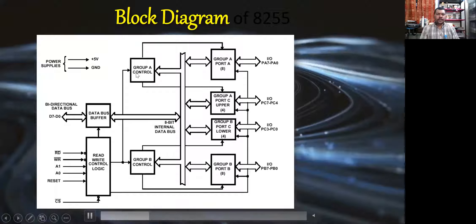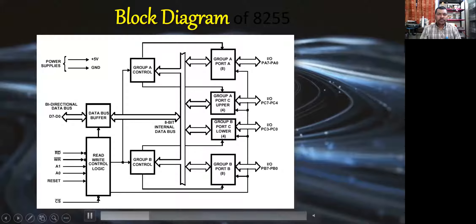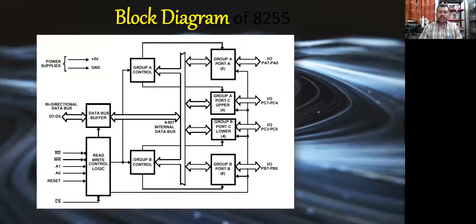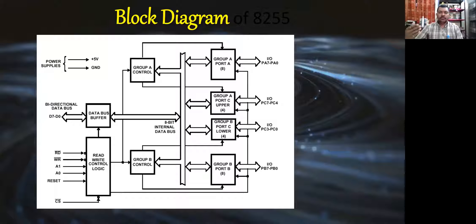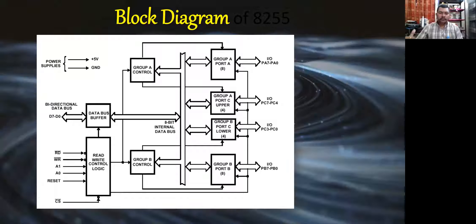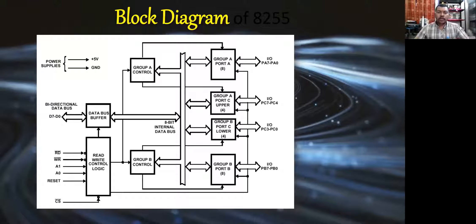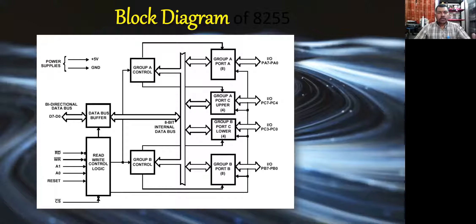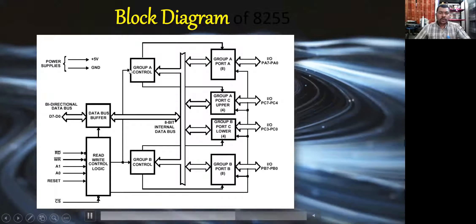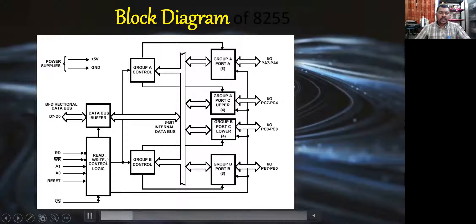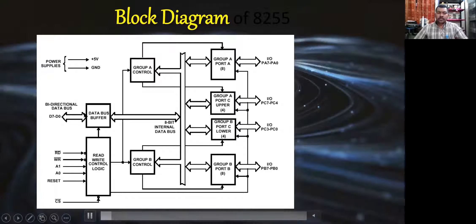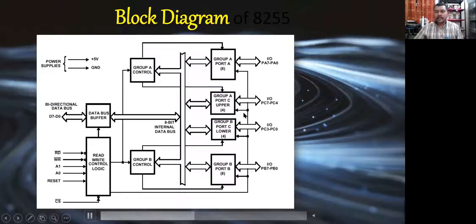This is the basic block diagram of 8255. It consists of three ports: Port A, Port B, and Port C. Port C can be used in two ways — Port C upper, which belongs to Group A, and Port C lower, which belongs to Group B. These ports can be programmed for inputting and outputting data as required.